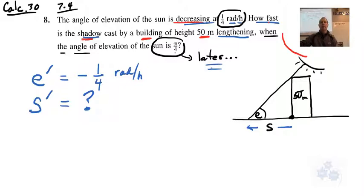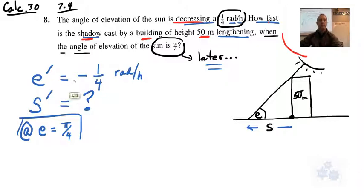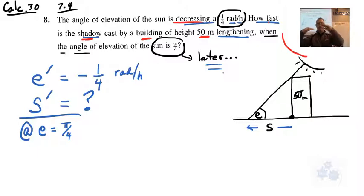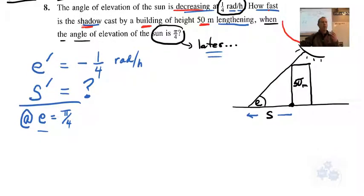We note that at e equals pi over four — that comes a little bit later. So we understand that the angle is decreasing, the shadow is lengthening, and we're going to find out what the instantaneous rate of change is of that shadow when the angle is pi over four. Now let's set this up — we want to find an equation that relates the two.